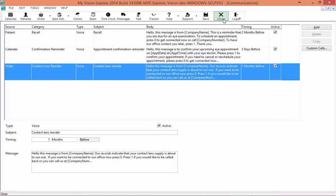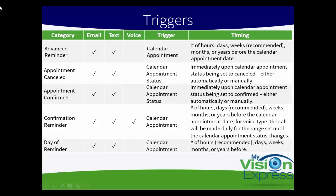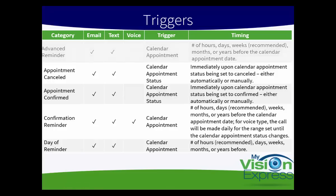Now we're going to go over each category of message that's available, how it can be sent, what triggers it, and the timing. We'll start with the advanced reminder — this can be sent either via email or text. It is triggered by a calendar appointment and will send hours, days, weeks, months, or years before the calendar appointment date. We do recommend that you send it a few weeks before.